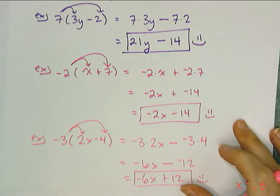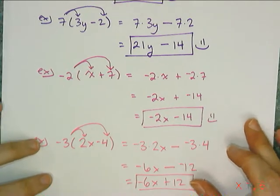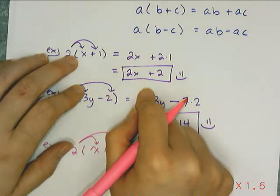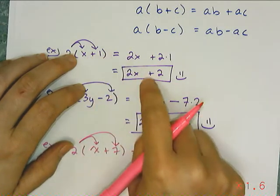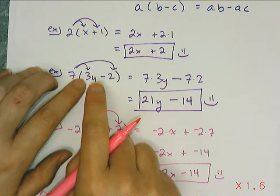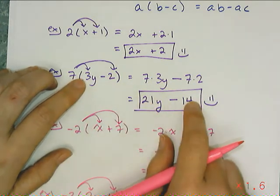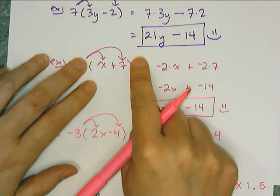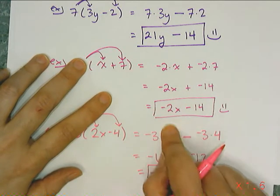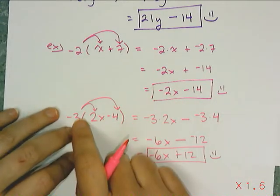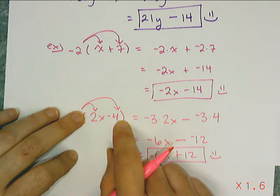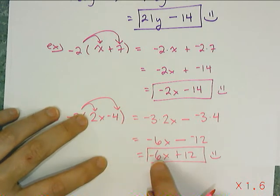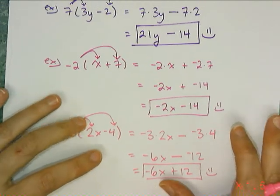The number one missed thing is messing up the signs. If you distribute a positive number, the sign combination inside the parentheses is exactly the same as the answer. Distributing a positive 7 over something positive and negative gives a positive and negative answer. But the exact opposite happens when you distribute a negative — you get the opposite signs. Distributing a negative over something positive and positive means your answer has a negative and a negative. When the signs inside are positive and negative, distributing a negative flips them to negative and positive.